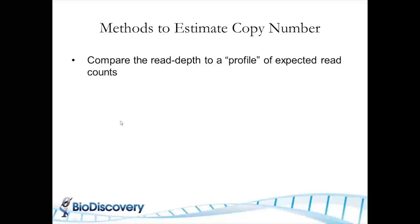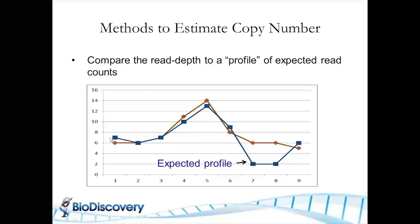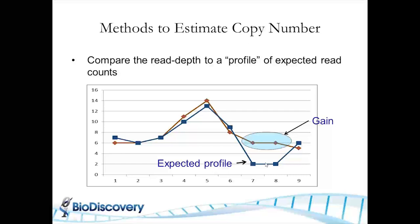But that's really not the case — you really want to compare to what you expect, an expected profile. So if you have an expected profile that runs along a blue line, then when you get 14 reads you say that's not really a gain because you would expect to get some number very close to that. But in another area, you would have expected to get something close to two but you're at six, so that might possibly be a gain. The key here is really coming up with this expected profile — think of it like an aCGH type of experiment where the question is: what's your reference that you're going to compare to?